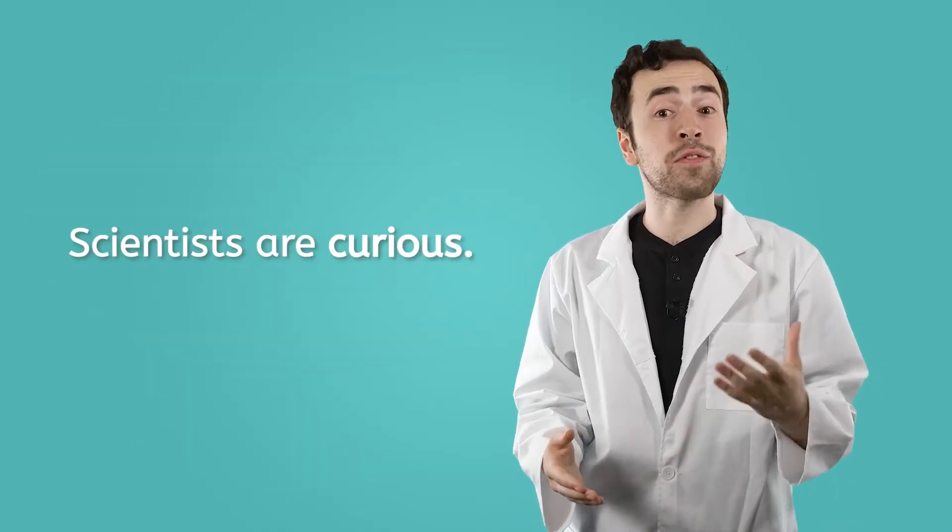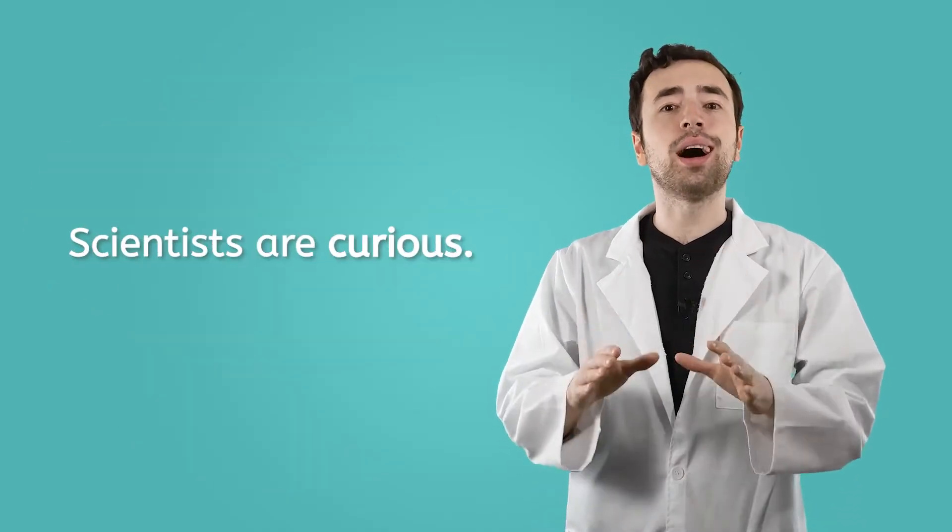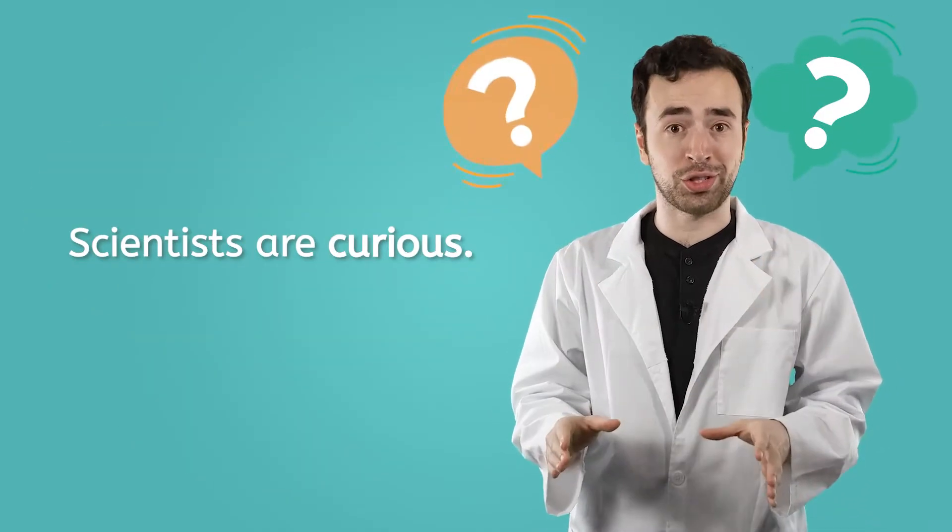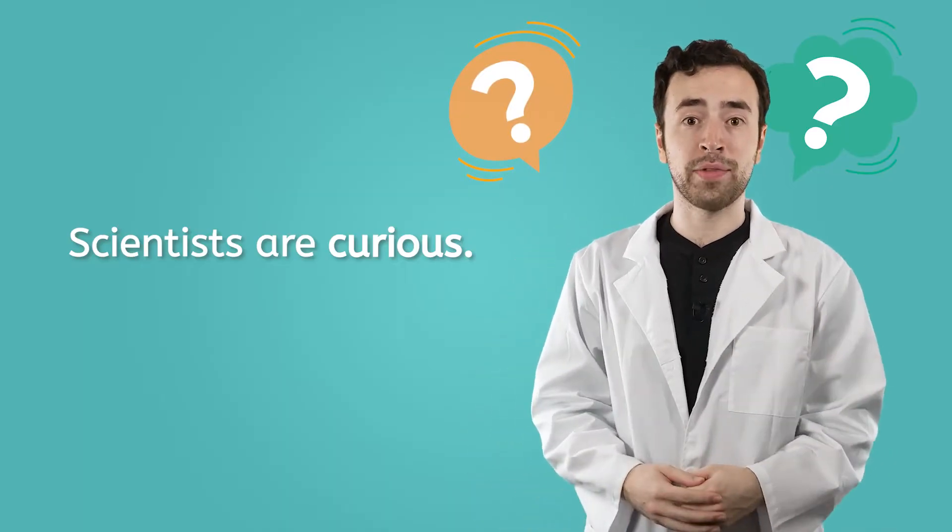The thing that makes a scientist unique is the way they think. So how does one think like a scientist? First and foremost, scientists are very curious. They are constantly asking questions, big and small, about the world around them.